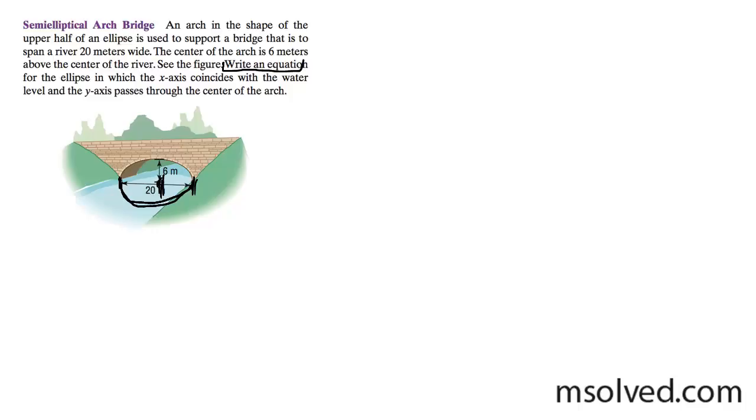So from that point to here, that would be 10. So in this form it would be x squared over, well, a squared plus y squared over b squared equals 1.